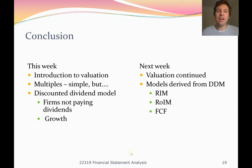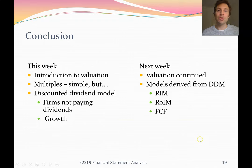That concludes our theoretical discussion of price multiples and the dividend discount model. I'll now do a demonstration using Gale Pacific — calculating price multiples and applying the dividend discount model with all three terminal value assumptions. Next week, we're going to look at the residual income model, the residual operating income model, and the discounted cash flow model — three more advanced valuation methods derived from the dividend discount model — to hopefully come up with more accurate company valuations.